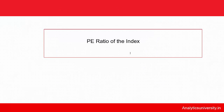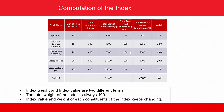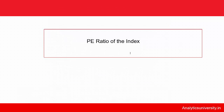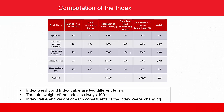We know that the PE ratio for any stock is the price per share divided by the trailing 12 months earnings per share. But we generally use statements like the market is expensive, cheap, or fairly valued. When people say 'the market,' they mean the index — it could be the Dow Jones or the Nifty 50 — and those statements are based on the PE ratio of the index.